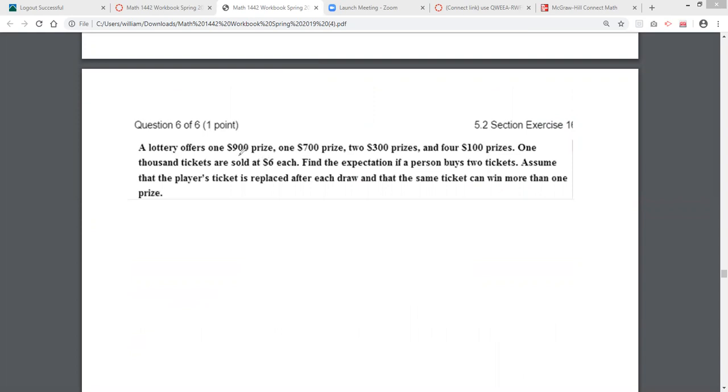A lottery offers one prize for $900, one prize for $700, two prizes for $300, four for $100. There are 1,000 tickets sold, and each ticket is $6.